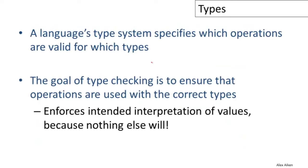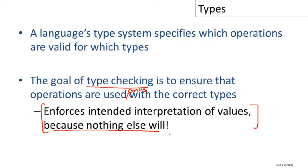Type checking enforces the intended interpretation of values. Once we get to machine code, it's all zeros and ones and the machine will do whatever operations we specify regardless of whether they make sense. The purpose of type systems is to enforce the intended interpretations of bit patterns — ensuring integer bit patterns don't have non-integer operations applied to them.